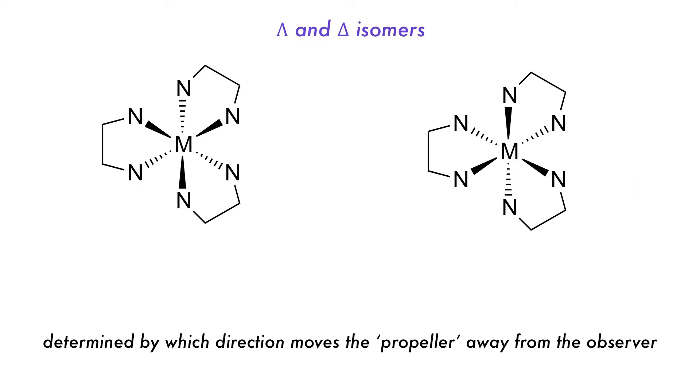Further to the ring isomers just discussed, complexes can have handedness derived from their multi-dentate ligands. If the complex with chelating rings is imagined as a propeller, it will move in a certain direction depending on its arrangement of ligands. If an anti-clockwise rotation moves the complex away from the observer, then it is a lambda isomer. If the opposite direction, a clockwise rotation is needed, then it is a delta isomer.